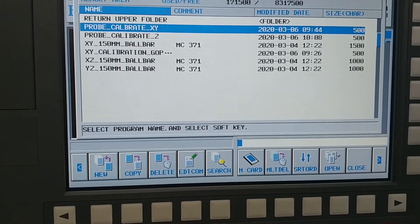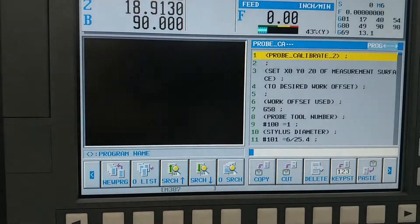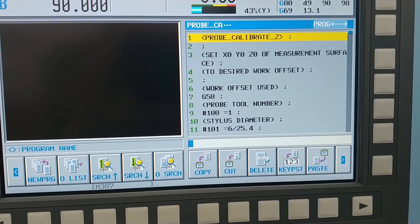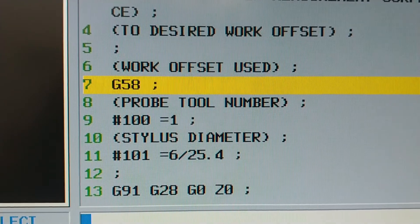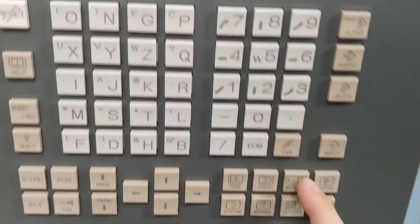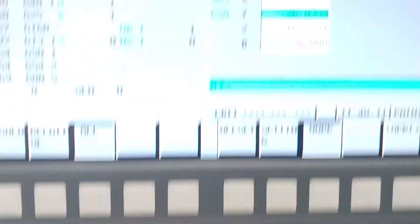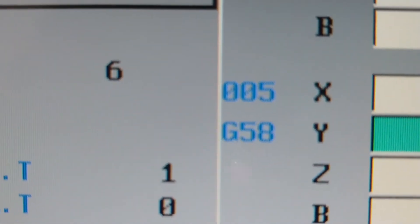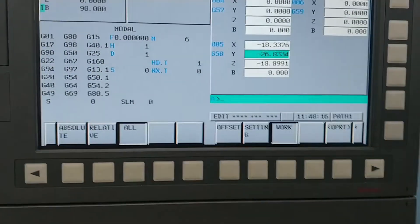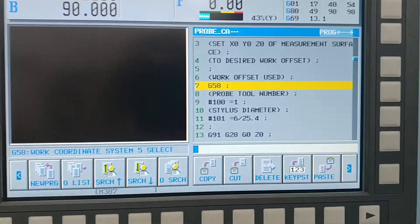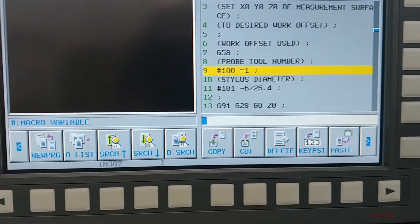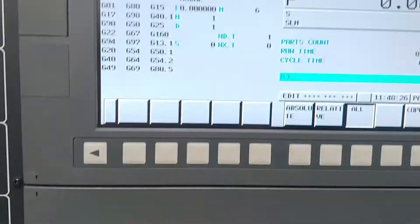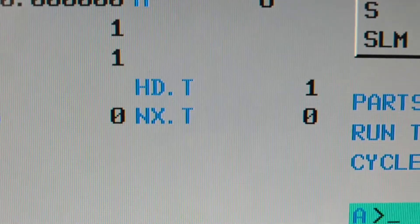Find the program titled Probe Calibrate Z and set it as the active program in the machine. Make sure the work offset called at the beginning of the program matches the work offset you have loaded the desired X, Y, and Z coordinates into. Below that, the probe tool number and probe stylus diameter are set to macro variables. Make sure that these values are correct and edit them accordingly if they are not.